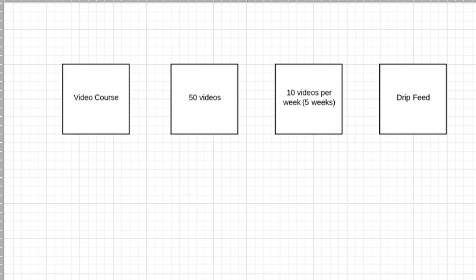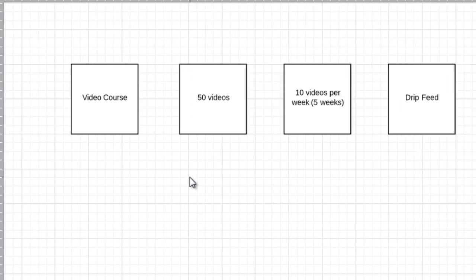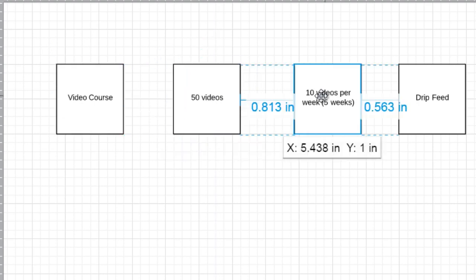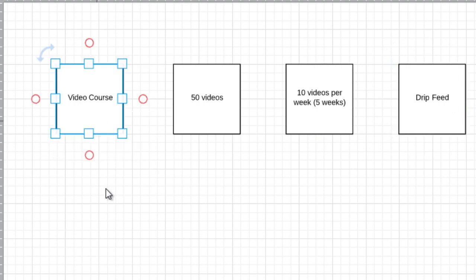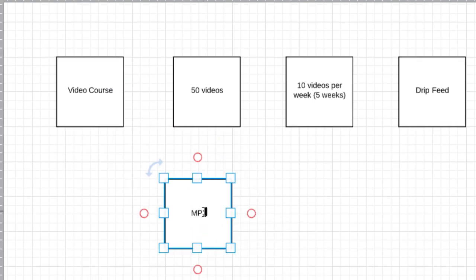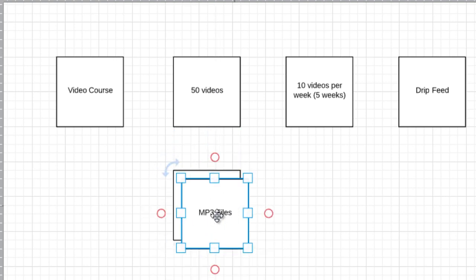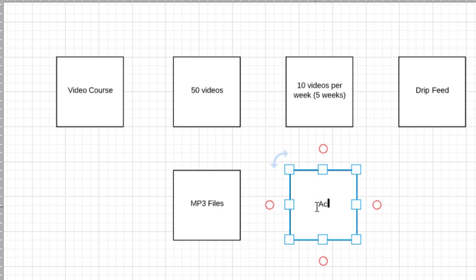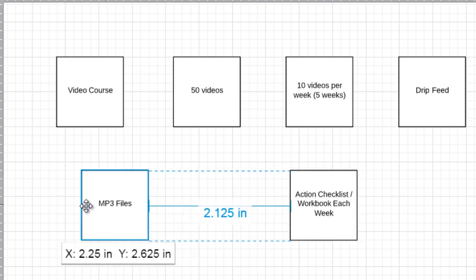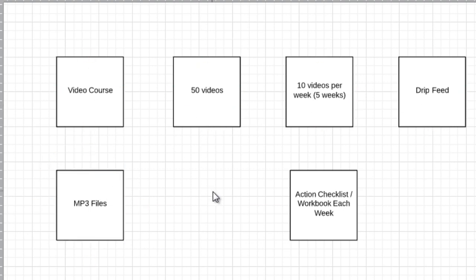Thinking about my audience — my audience tends to be very visual and kinesthetic, because people who like videos are visual or kinesthetic. Auditory people typically want podcasting, MP3 files, and just the audios themselves. So maybe I'll include the MP3 files as well. And maybe to get them to actually complete the work, I'll include some sort of action checklist or workbook each and every week. So they get 10 videos per week plus those additional materials. Video course and MP3 files are just mediums — I'm categorizing them without putting them in any order yet.